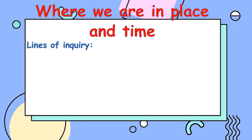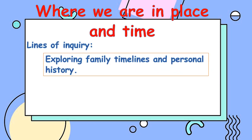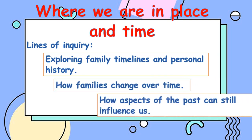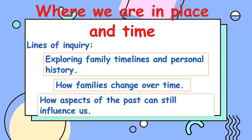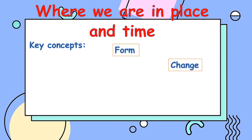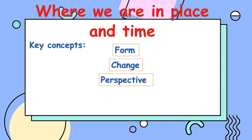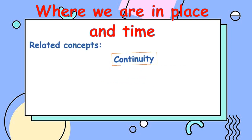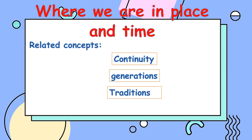We will investigate these lines of inquiry: exploring family timelines and personal history, how families change over time, and how aspects of the past can still influence us. We will use the key concepts form, change, and perspective. The related concepts are continuity, generations, and traditions.